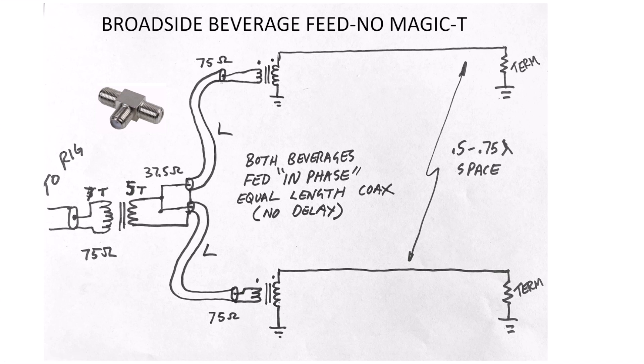If we put two 75 ohm coaxes in parallel we end up with 37.5 ohms of impedance, so we need to step that back up to 75 ohms to the rig. We do that with an impedance matching transformer, basically five turns to seven turns. This will work, but the preferred way is to use what's called a magic T.